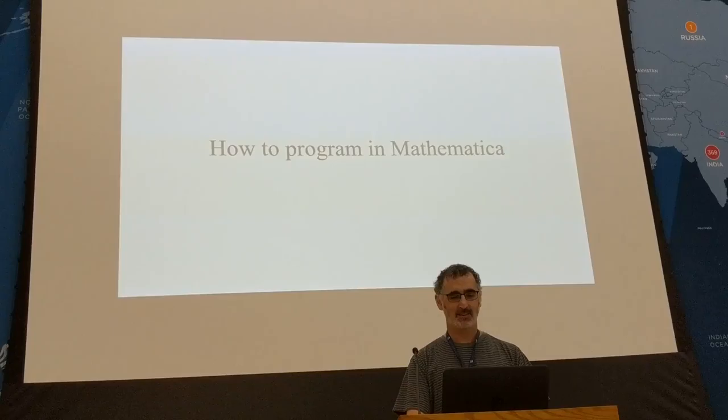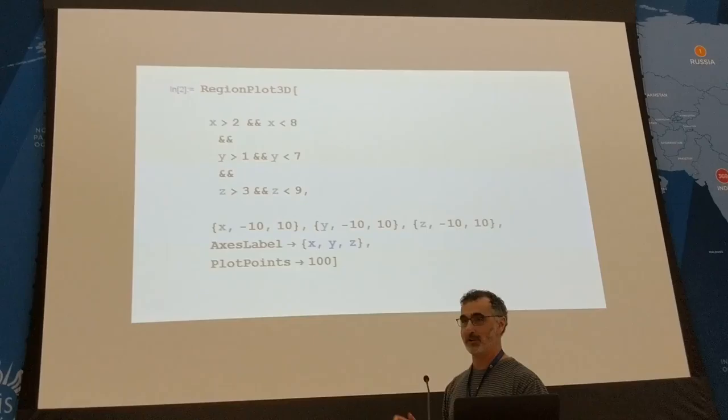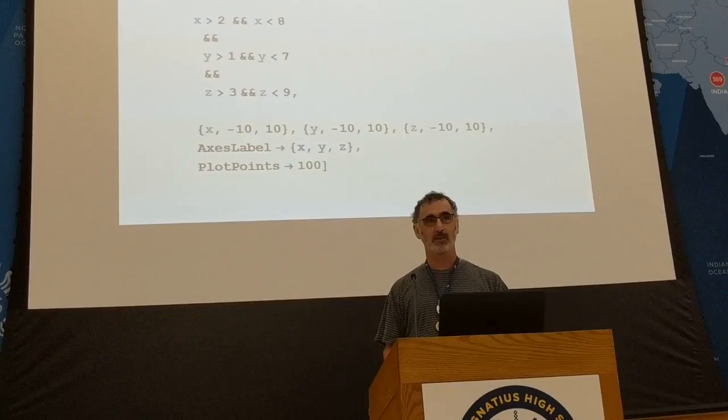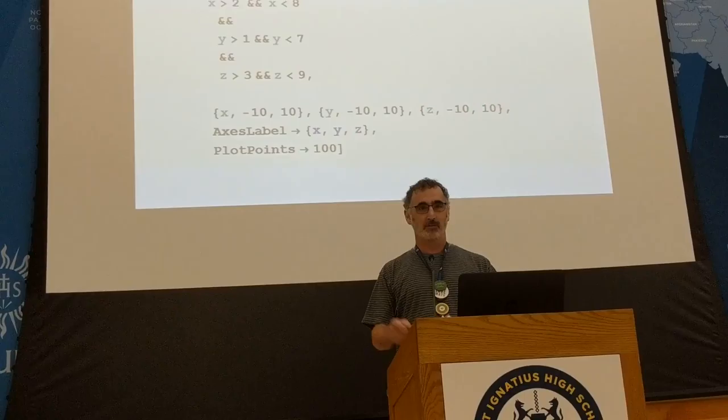I have a program in Mathematica, and it's really very simple. This is the one command you use — it's Region Plot 3D. Basically we're plotting systems of inequalities in three-dimensional space. You have the first section with the six equations, and it'll let you think about what shape this is going to make. Then you have the window with the brackets, the axis labels for X, Y, and Z, and then plot points, which is your resolution on the screen.